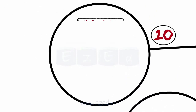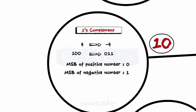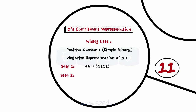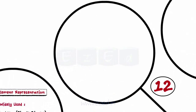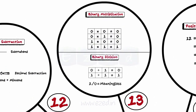1's complement is another way to represent negative numbers. A negative number is stored as the bitwise complement of the corresponding positive number. The leftmost bit, the MSB, of a positive number is 0; that of a negative number is 1. 2's complement is another way to represent negative numbers. To get a negative number: 1. Write the positive number in binary. 2. Take the 1's complement — change all 0's to 1's and 1's to 0's — then add 1. For subtracting two binary numbers: compute the 2's complement of the subtrahend, add it to the minuend, and drop the high-order 1. Binary multiplication and division are carried out in the usual way used for decimal numbers.